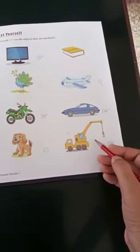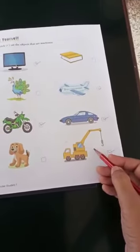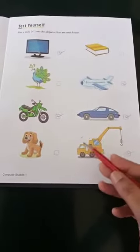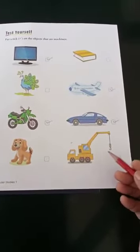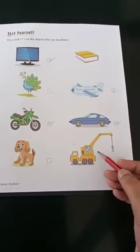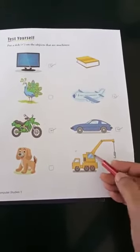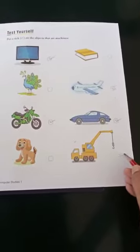The next picture, can you tell me what is this? This is a crane. This is used to pick heavy things. This is a machine. So put a tick mark here.